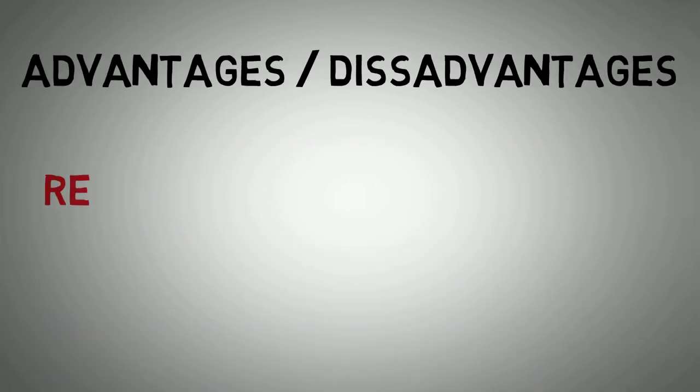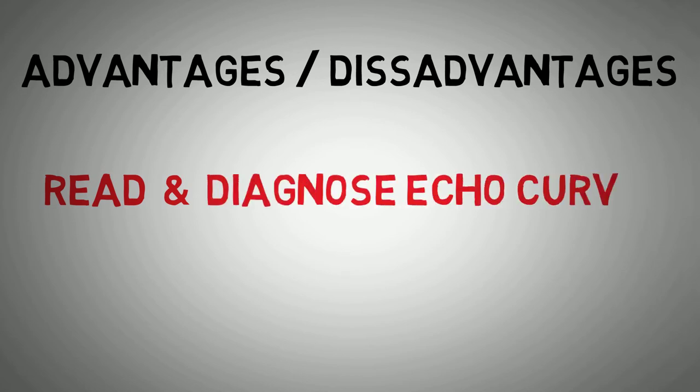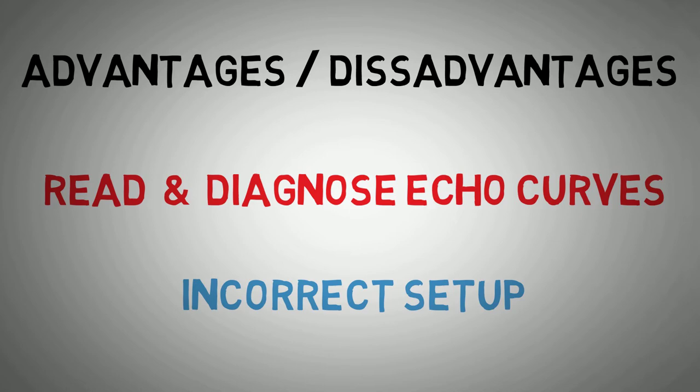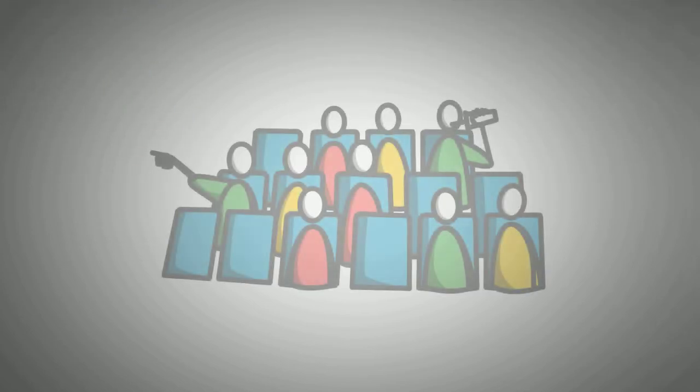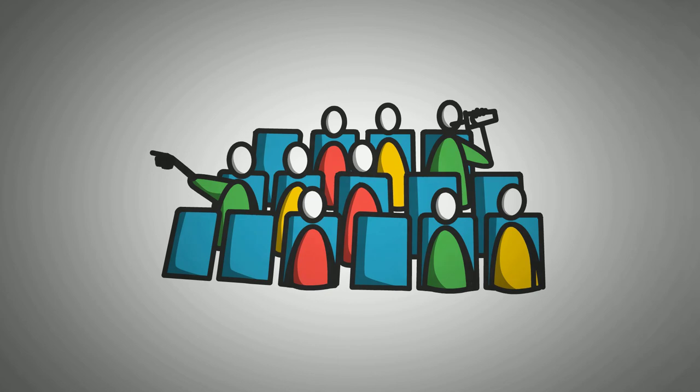I'm going to discuss some of the advantages and disadvantages as well as show you how to read an echo curve and spot an incorrectly set up GWR. Before I do, if you like this type of content I would really appreciate you liking the video and consider subscribing if you aren't already. It really helps push my videos to a wider audience who may also benefit from the content, so thank you if you did.